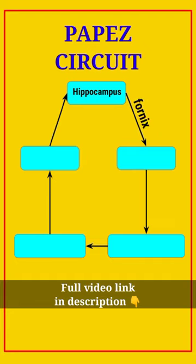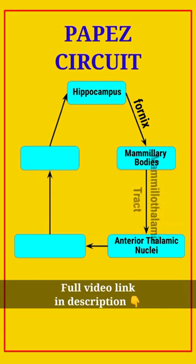The fornix takes information from the hippocampus and synapses with the mammillary bodies. Then the neurons in the mammillary bodies send their fibers to the anterior thalamic nuclei through the mammillothalamic tract. Then the axons of the anterior thalamic nuclei go to the cingulate gyrus.